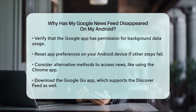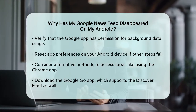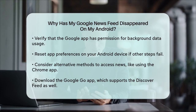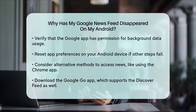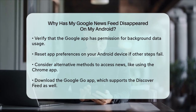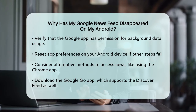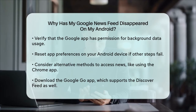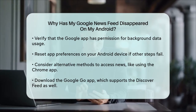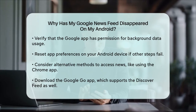If none of these steps work, you might want to reset the app preferences on your Android phone. This will reset the settings without deleting any data. Go to Settings, then to Apps, tap on the three-point icon, and select Reset App Preferences.